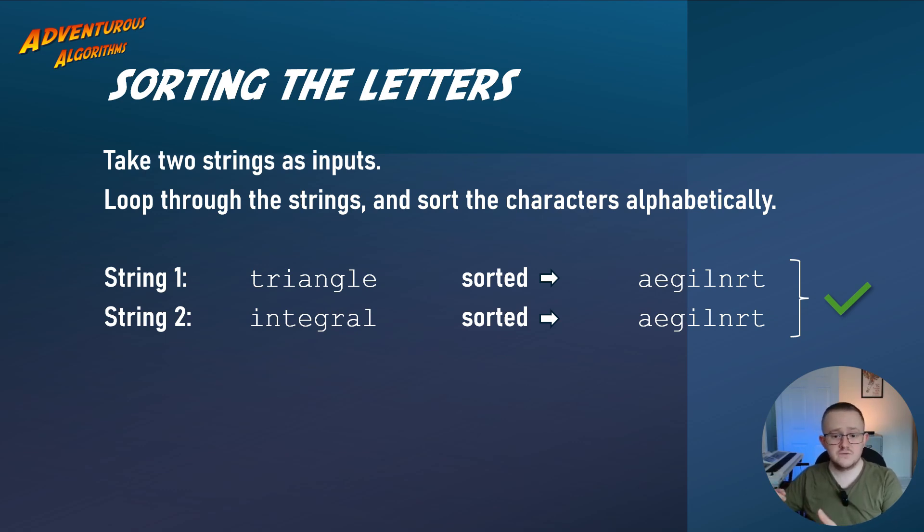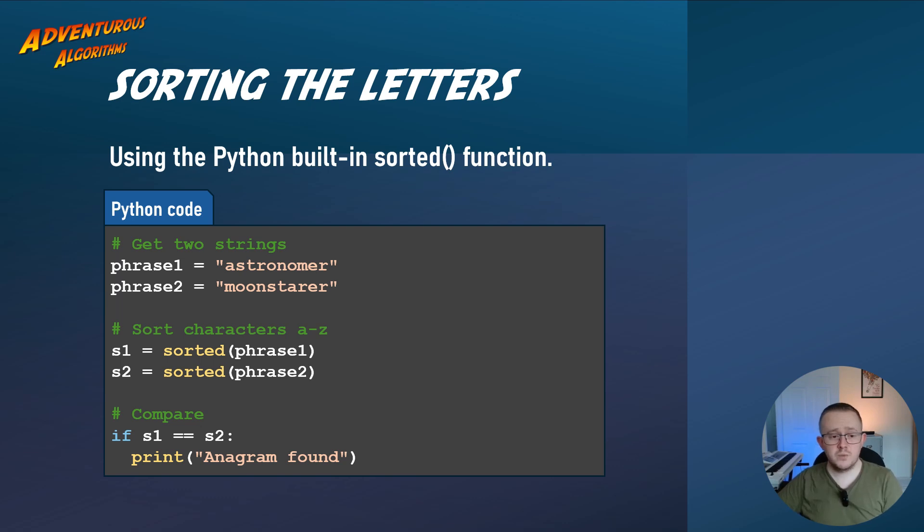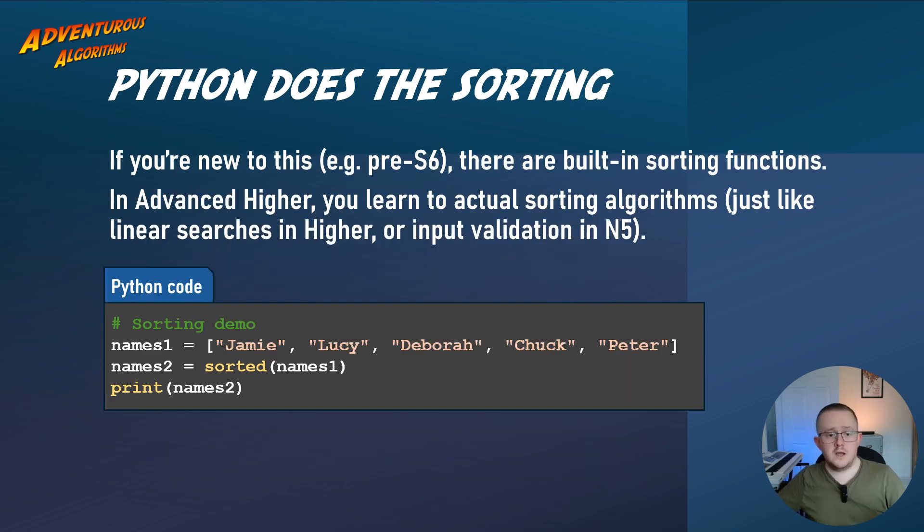I've got a piece of Python code here that does it, and it's really simple if you can use built-in functions, or if you're thinking in terms of like national five and higher, predefined functions. So using Python's built-in sorted function, I've got two phrases there, phrase one and phrase two, astronomer and moon starer. I sort the characters, a to z, so I'm using this sorted function, which is not something that we cover in the SQA courses. If those two sorted phrases match each other, then we must have an anagram.